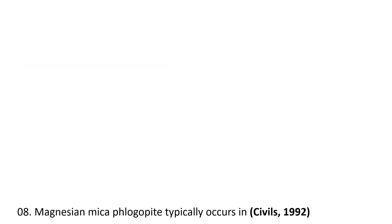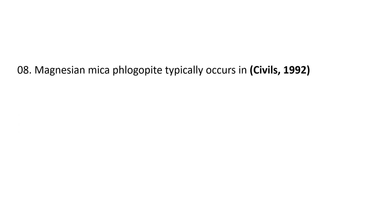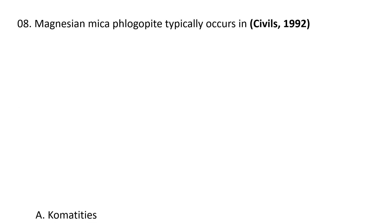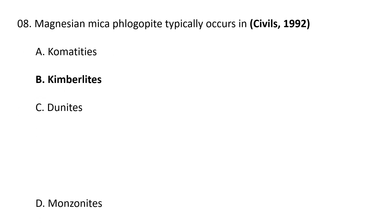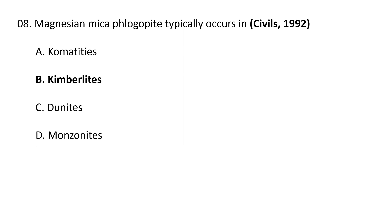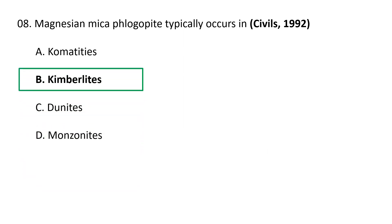Next question: Magnesium mica phlogopite typically occurs in A. Komatiites, B. Kimberlites, C. Dunites, D. Monzonites. Phlogopite mica is associated with kimberlite, so B is the correct answer.